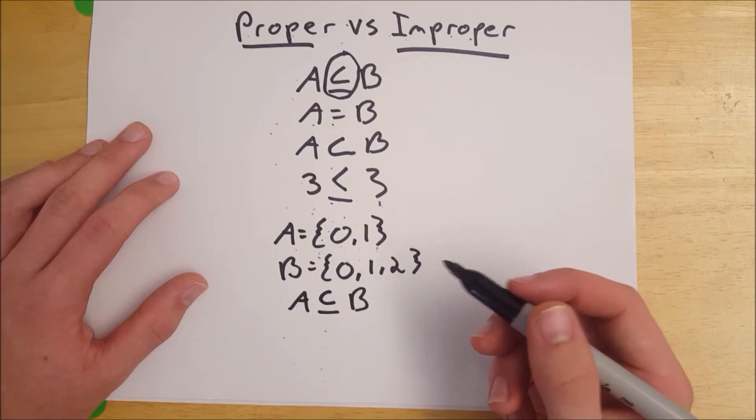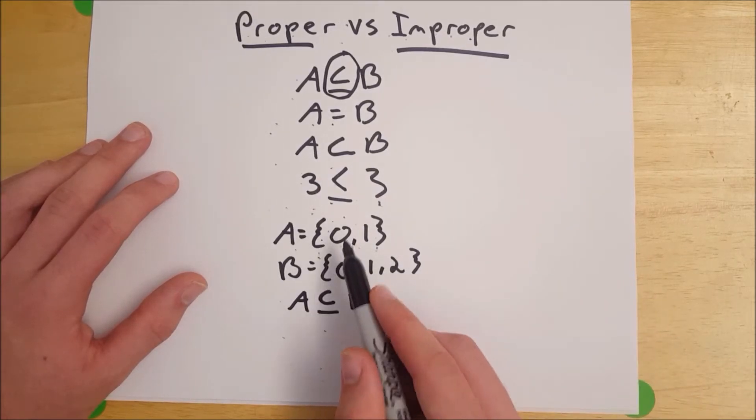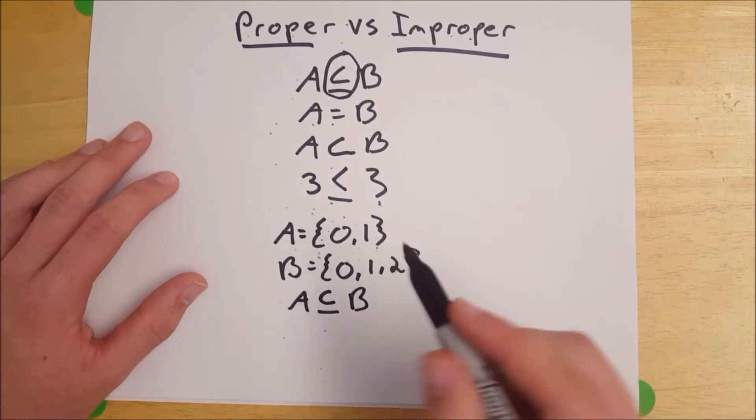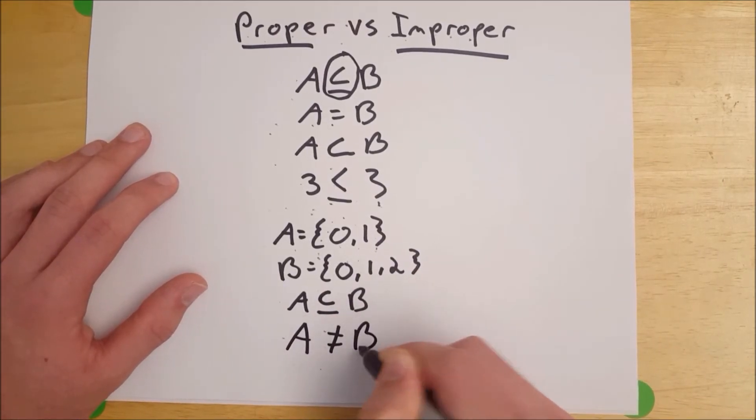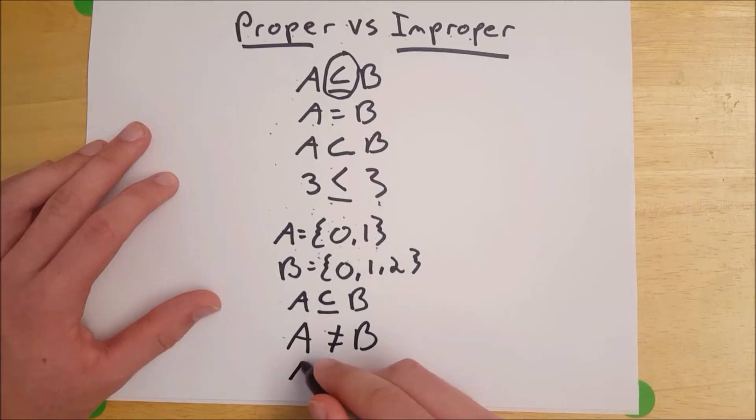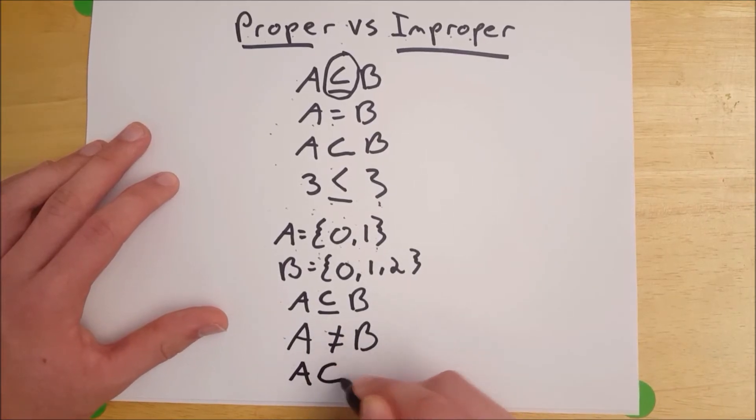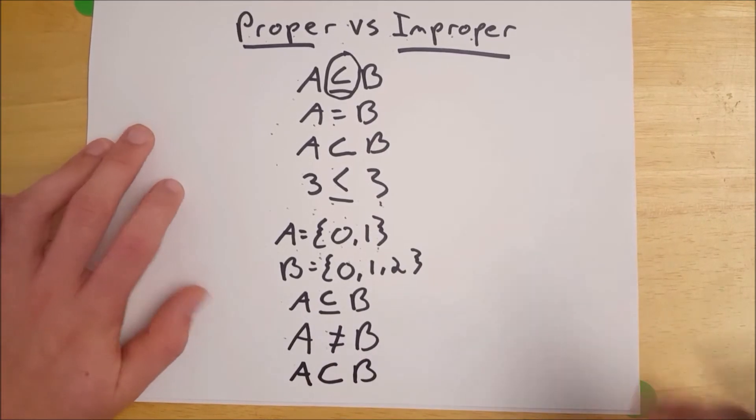Then we could say that A is a subset of B using the line. That's not incorrect. However, we know that A is a proper subset of B because B has 2 and A doesn't, which means that A is not equal to B.